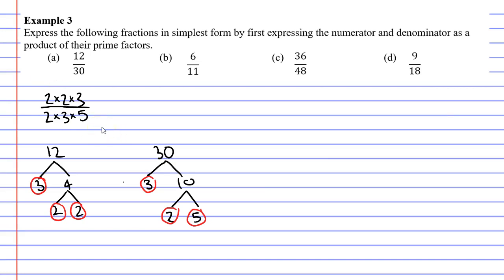Now that we have our prime factors we can start to cancel numbers and the rule is that whatever number you cancel above you must cancel the same number below. So we can cancel out the 2's and we can also cancel out the 3's leaving us with a 2 above and a 5 below. I have now put my fraction 12 over 30 in simplest form as 2 over 5.